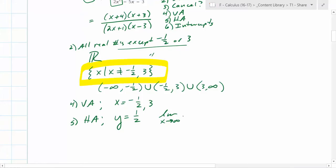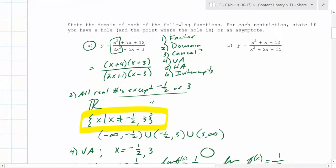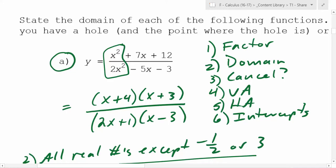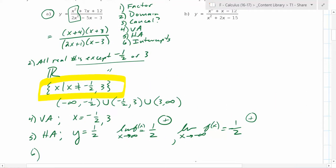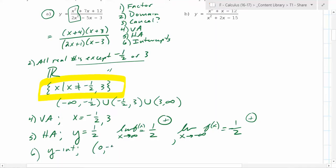The limit as x goes to infinity is one half — and you need to figure out the side. And the limit as x goes to negative infinity of f(x) is also one half. Because no matter what, the top is always positive and the bottom is always positive — a positive over a positive is a positive — so it's always going to go to one half. The y-intercept is when x is zero, so that's 0 comma — plug in zero for x. You get 12 over negative 3, which is negative 4. So that is the y-intercept.